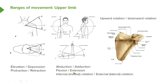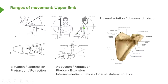We have flexion and extension. So we have flexion of the upper limb, where we can see the upper limb is going to move in this direction. And then we can have extension, where the upper limb can move backwards in this direction. So flexion of the upper limb at the elbow joint and then extension of the upper limb at the elbow joint.